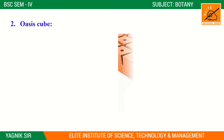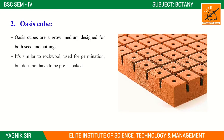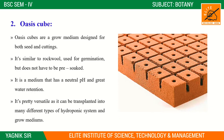The second growing medium is oasis cubes. Oasis cubes are a growing medium designed for both seeds and cuttings. Mostly, oasis cubes are used for plant germination — seed germination — but they do not have to be pre-soaked. Most cases they are used in the germination stage. It is a medium that has a neutral pH.